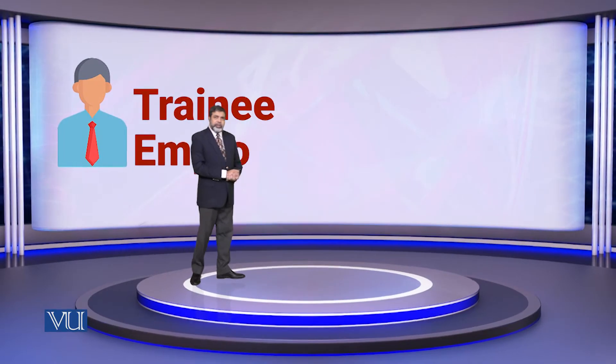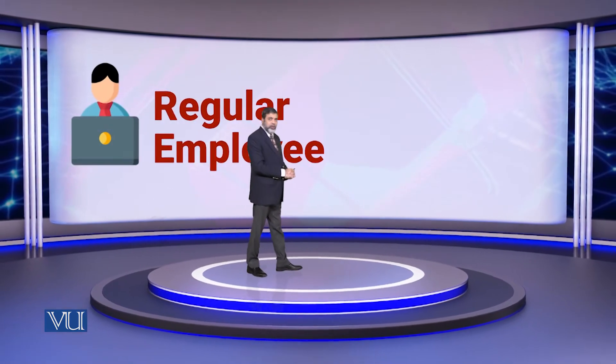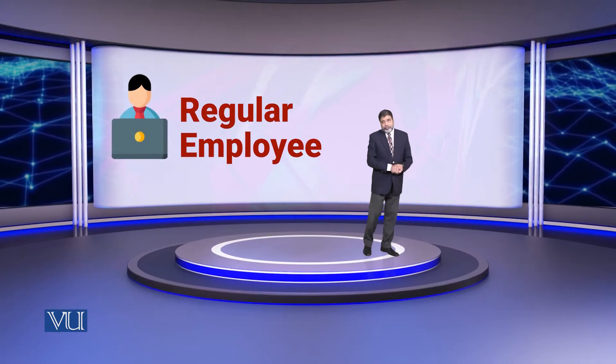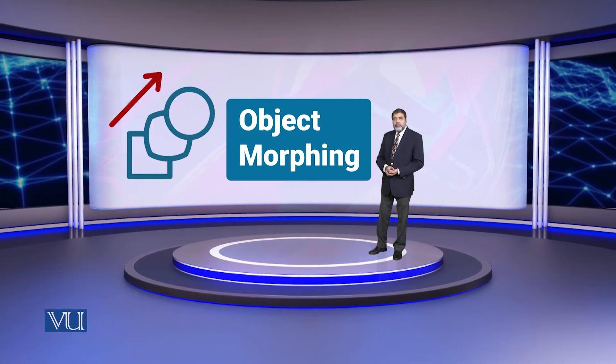Let us say the training period or probation period is three or six months, whatever. The training employee becomes a regular employee. So what is the problem? There is a big problem, and this problem is called object morphing.